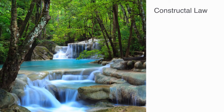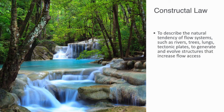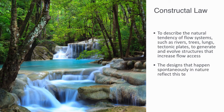Another way of understanding this is through the more general theory of what is called the constructal law. Constructal law is a term recently coined by Adrian Bejan to describe the natural tendency of flow systems such as rivers, trees, lungs, and tectonic plates to generate and evolve structures that increase flow access. It holds that shape and structure arise to facilitate flow. The designs that happen spontaneously in nature reflect this tendency — they allow entities to flow more easily, to measurably move more resources further and faster per unit of useful energy.